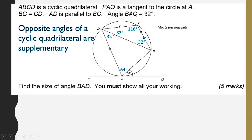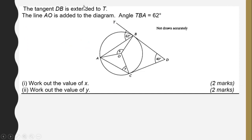We have reviewed alternate angles, angles in alternate segments, and the cyclic quadrilateral property. Now the tangent DB is extended to T, and line AO is added to the diagram. Angle TB is 62 degrees.